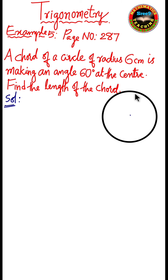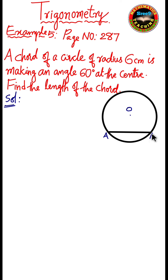Now let us see the solution. First we have to draw the circle whose center is O. Now let us draw the chord. Here, observe — this is the chord we are drawing, and its name is AB. The chord length is AB, and AB is the chord which is making an angle at the center. The angle it is making is 60 degrees, as given.